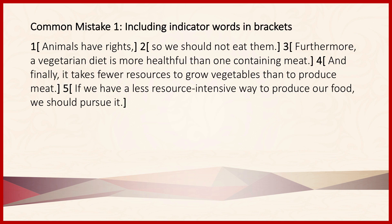One mistake that students commonly make when numbering and bracketing a passage like this is to include indicator words in the brackets. We see here that propositions 2, 3, and 4 all include indicator words — specifically the words 'so,' 'furthermore,' 'and,' and 'finally.' Remember that these are, strictly speaking, not parts of the propositions that they introduce, and so they should not be included in brackets. Sometimes indicator words are actually embedded within the middle of propositions, and in those cases there's nothing we can do but include them within the brackets. But if we can exclude them, we do exclude them.